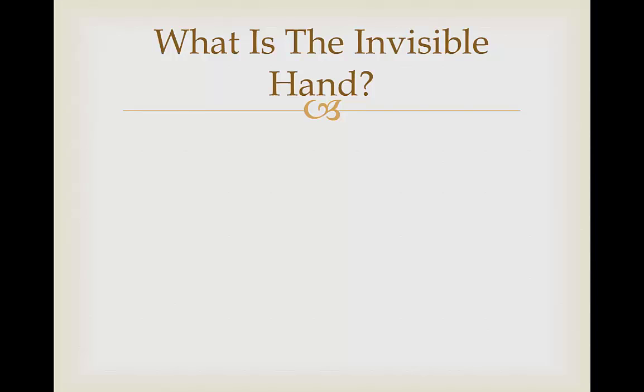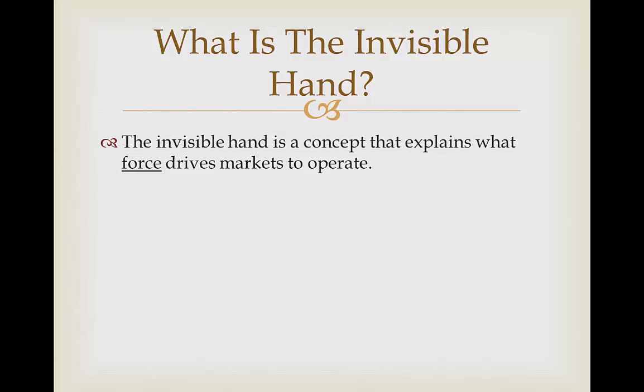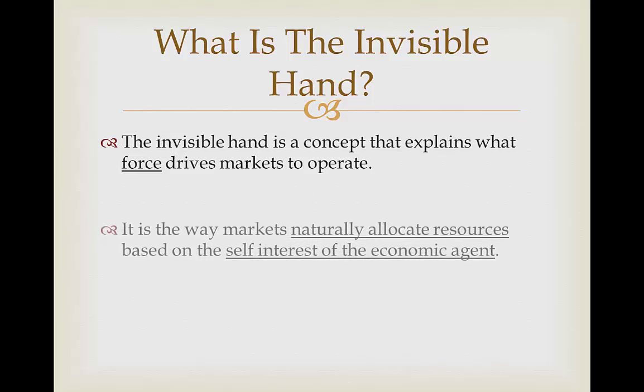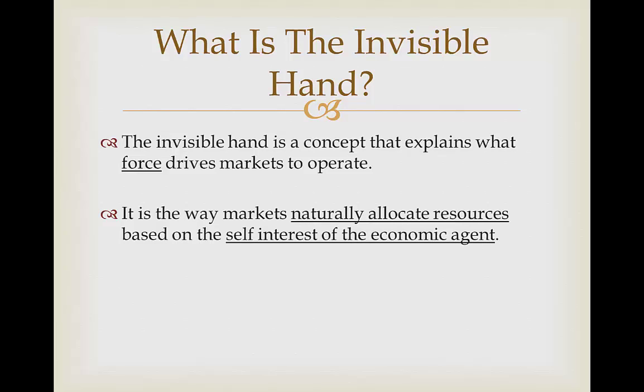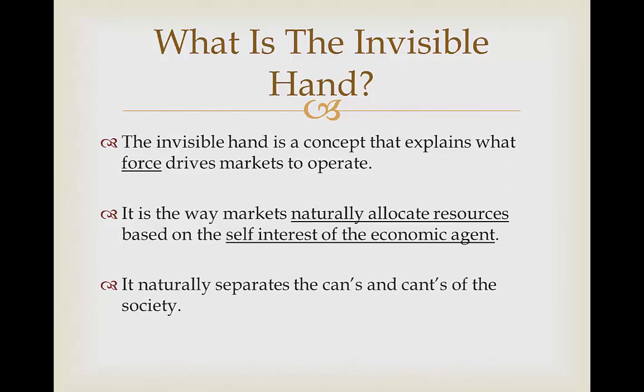What is the invisible hand? The invisible hand is a concept that explains the force which drives a market to operate. It is the way in which markets naturally are going to allocate resources based on the self-interest of the economic agent. It's naturally going to separate the haves and have-nots of the society. I'm going to show now with a little animation which shows what the invisible hand is going to do to an economic agent, which allows a market to operate.